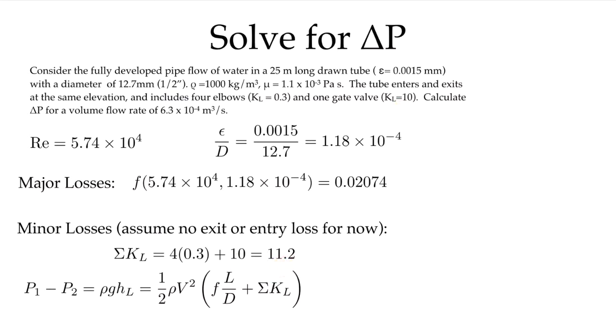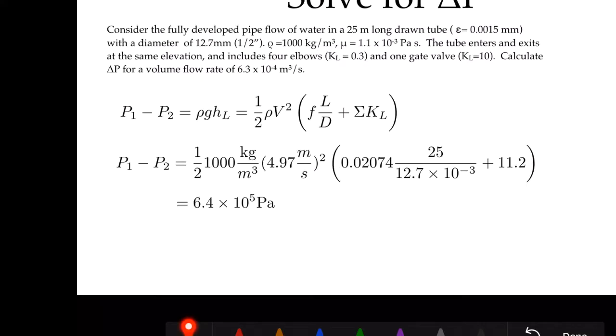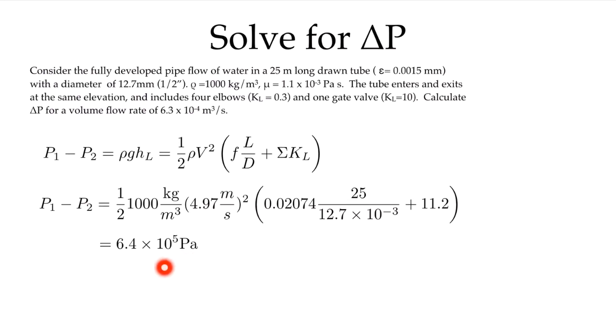The total is going to be 11.2. Now I can directly solve my P₁ - P₂ or the pressure drop across the pipe, as I know I've solved now for the velocity, I know the density, I've solved my friction factor, I know my L/D ratio, and now I know the sum of my minor losses. If I plug that in, I get a value of 6.4×10⁵ pascals.